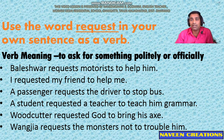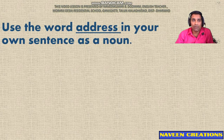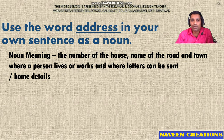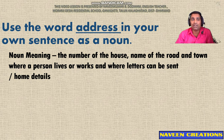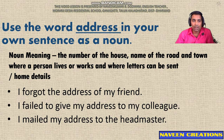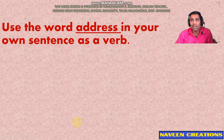The next word is 'address.' Use the word address in your own sentence as a noun. The noun meaning of address is the number of the house or name of the road and town where a person lives, works, or resides, and where letters can be sent — basically house or home details. Examples: I forgot the address of my friend. I failed to give my address to my colleague. I mailed my address to the headmaster. In all these sentences, the word address is used as a noun, not as a verb.